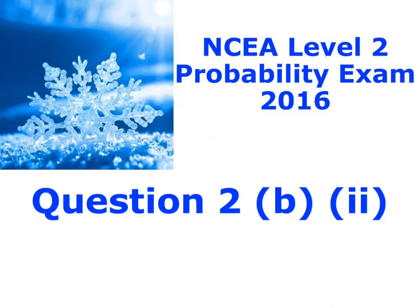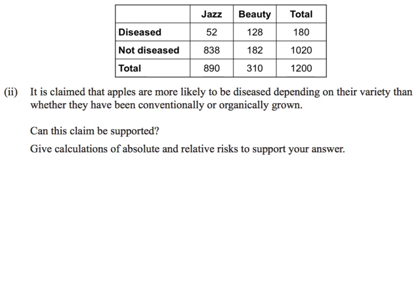Here is question 2b, part 2. So I've got the little table above. This is the table that we put together previously, looking at whether apples are diseased or not, and whether they're of the jazz or beauty variety.